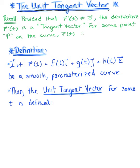Here's our formal definition. We want to begin by letting vector r of t be our vector-valued function, and this is a smooth and parameterized curve. In other words, it's continuous and differentiable on a closed interval.